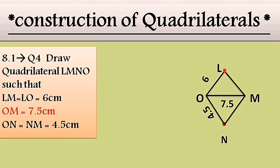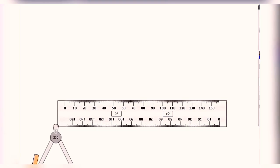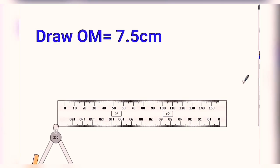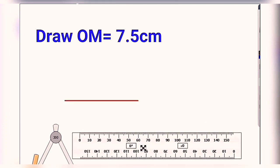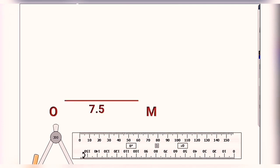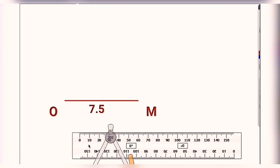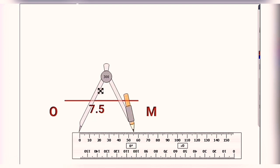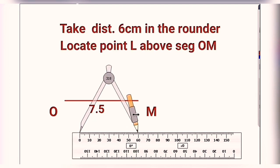Let's do it practically. As per our plan, we are going to draw diagonal OM first. Always keep in mind: when one diagonal is given, we draw the diagonal first. The 7.5 cm segment is drawn properly. Boys and girls, keep in mind — don't miss even half a millimeter.